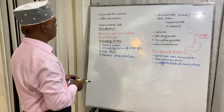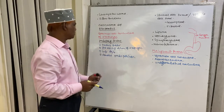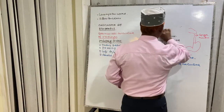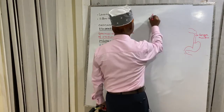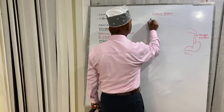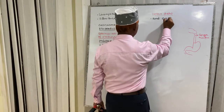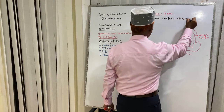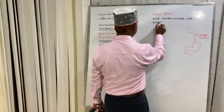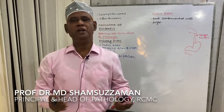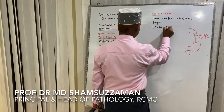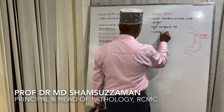First, come to dietary factors associated with esophageal carcinoma. These include food contaminated with fungus, and diet with high content of nitrites and nitrosamines.